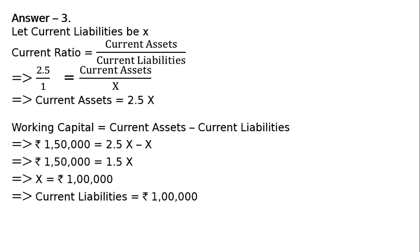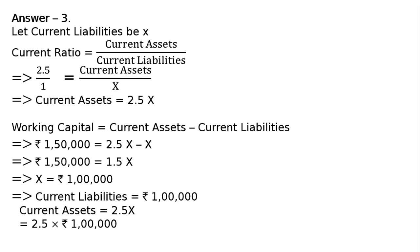Current liabilities is equal to Rs. 1,00,000, because we had let current liabilities be X. Now, current assets is equal to 2.5X, that is 2.5 multiplied by Rs. 1,00,000, which equals Rs. 2,50,000. So current assets is Rs. 2,50,000 and current liabilities is Rs. 1,00,000. We have got the final answer.